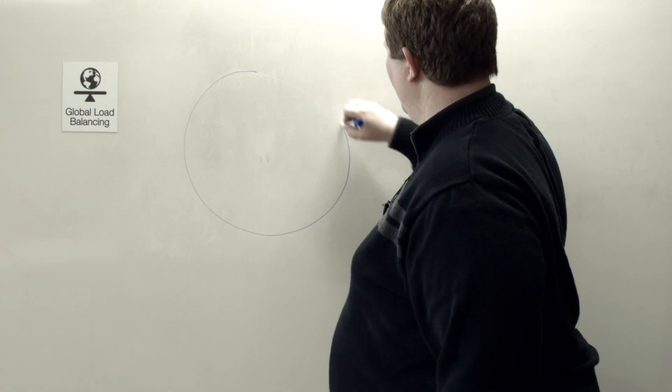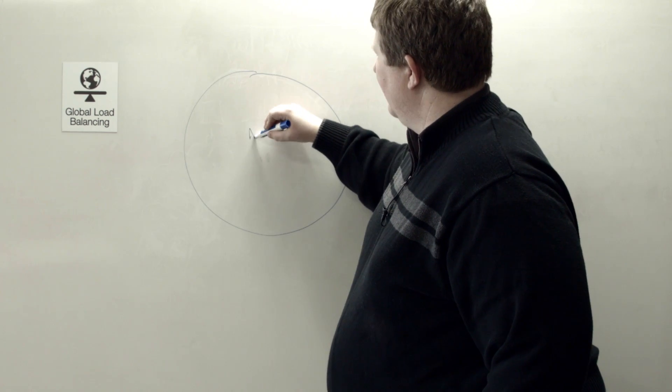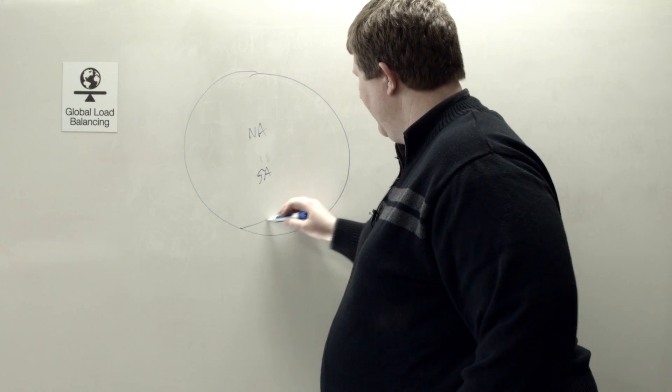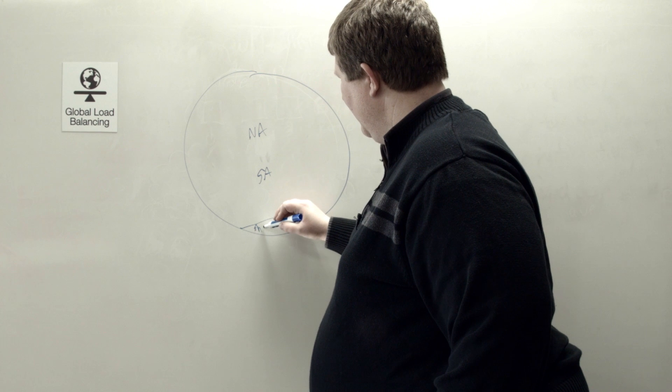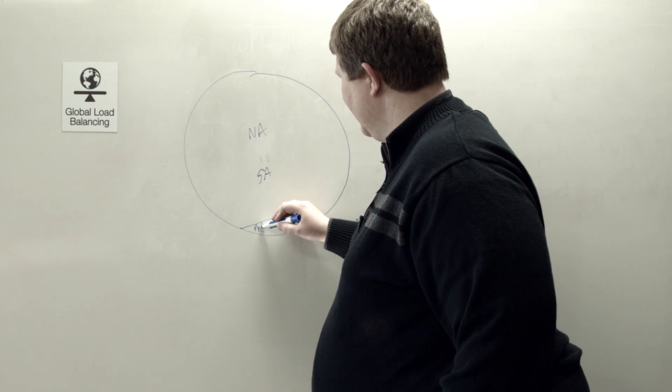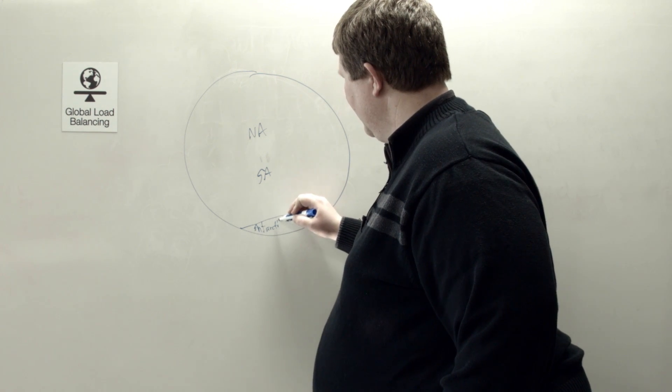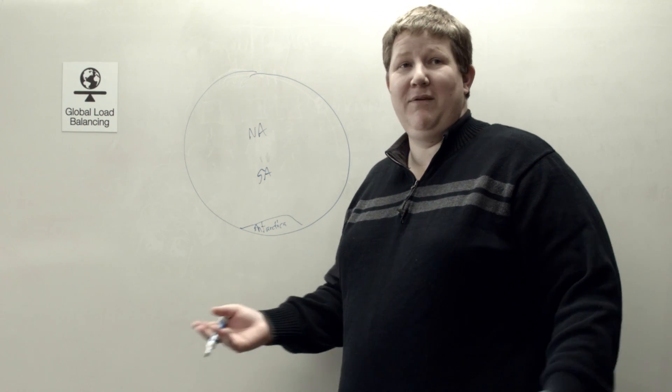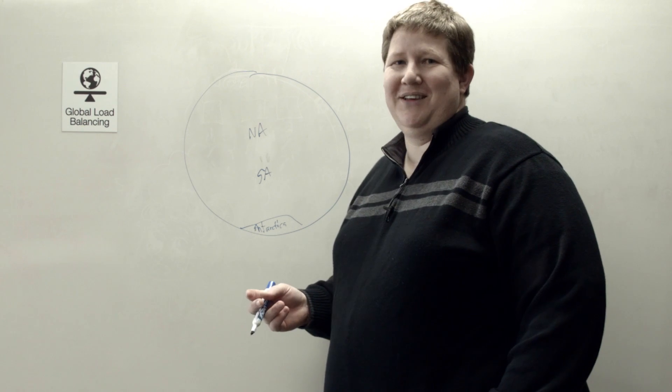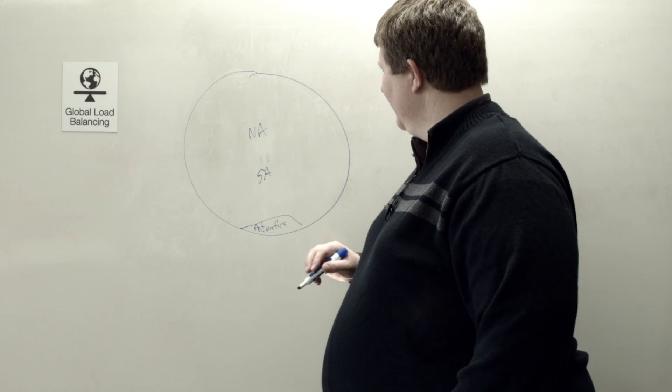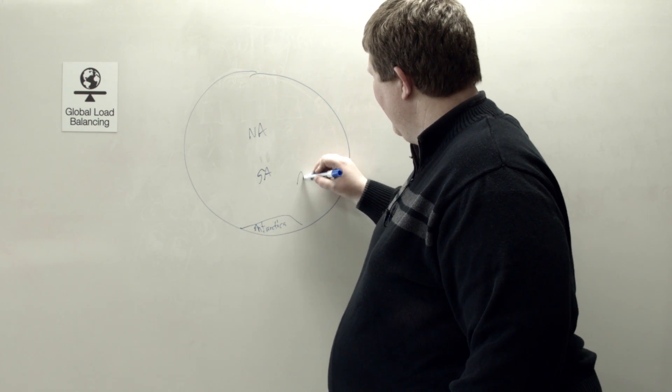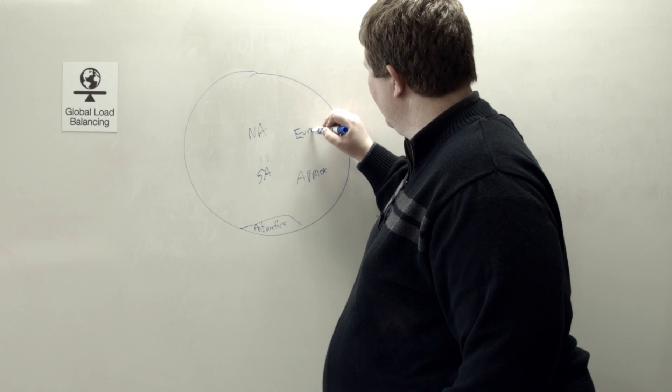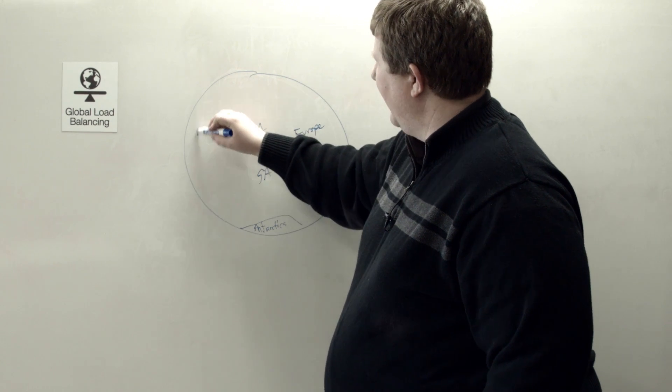If we draw the world, we've got North America, South America, for some reason in there is Antarctica. I don't know a whole lot of IP traffic that comes there, maybe from the science bases that are there, maybe the penguins are hanging out and getting on the internet. We have Africa and then we have Europe and then we have Asia.